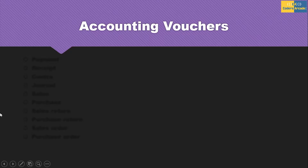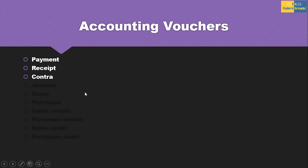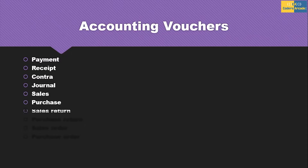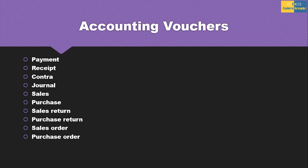Next is Accounting Vouchers. In Accounting Vouchers, you will be passing all the transactions. That is Payment, Receipt, Contra, Journal Vouchers, Sales Vouchers, Purchase Vouchers, Sales Return, Purchase Return, Sales Order, and Purchase Order.